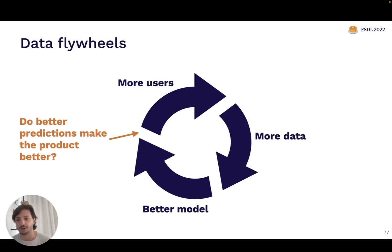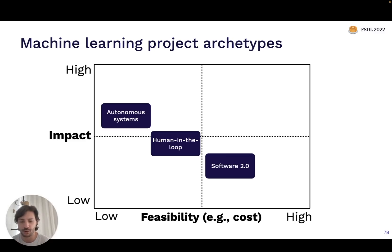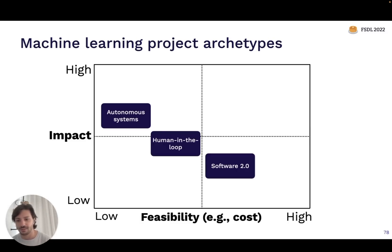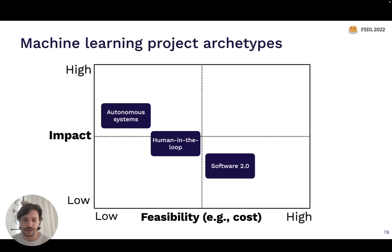These project archetypes have different trade-offs on the feasibility versus impact matrix. Software 2.0 projects, since they're taking something you already know you can automate and automating it better, tend to be more feasible but also lower impact. On the other extreme, autonomous systems tend to be very difficult to build because accuracy requirements are quite high, but the impact can be quite high too because you're replacing something that literally doesn't exist. Human-in-the-loop systems tend to be somewhere in between — you can build things that couldn't exist before, but impact is not quite as high because you still need people in the loop.